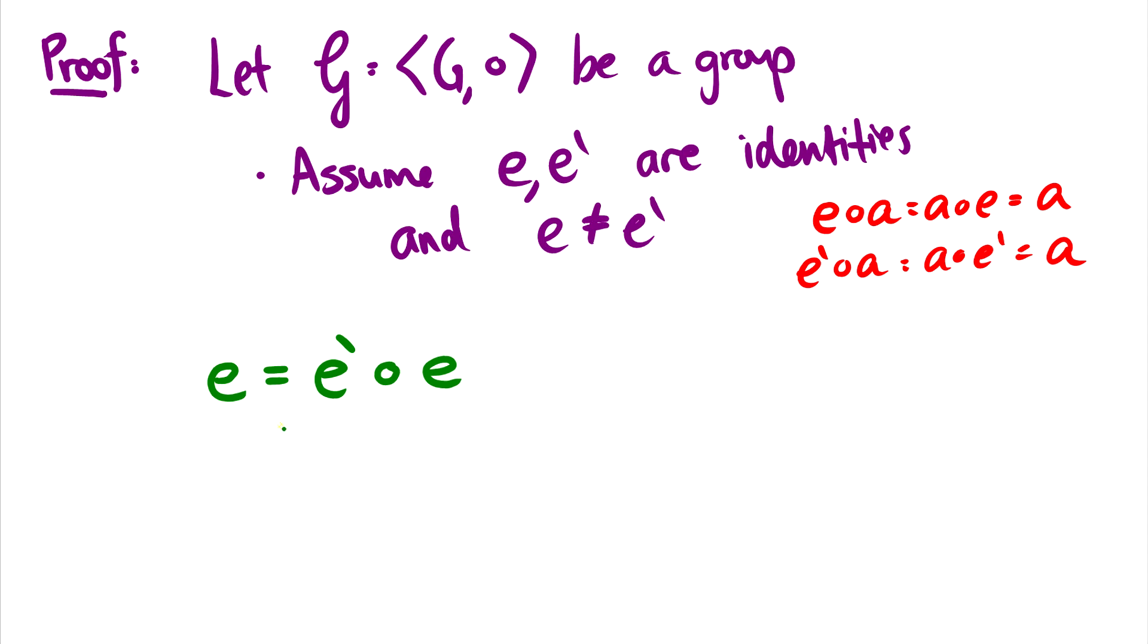But what do we know about this group? Well, identities are commutative. Identities will always be commutative, which means that we can flip around e and e′. So we can take e○e′. Okay. So if we do the same thing as before, and we take this as the identity element, which maps the second one back to itself, we also know that e is an identity element, which means that it can map this e′ back to itself, which means that this is just equal to e′.